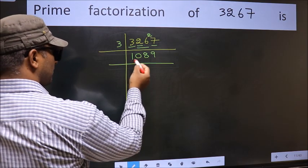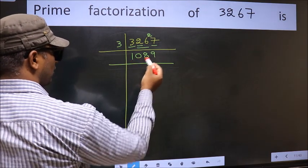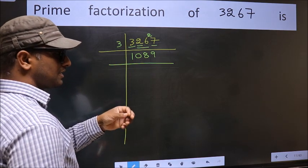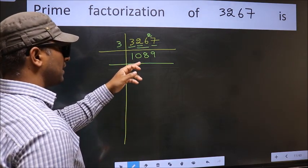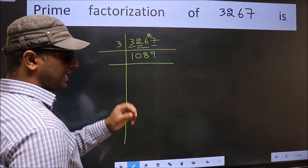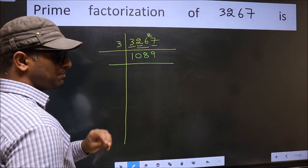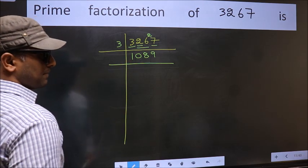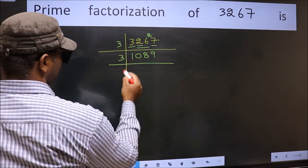Now to check whether 1089 is divisible by 3 or not, we add the digits: 1 plus 0 plus 8 plus 9 equals 18. And 18 is divisible by 3, so this number is also divisible by 3.